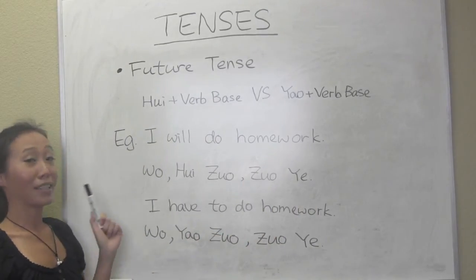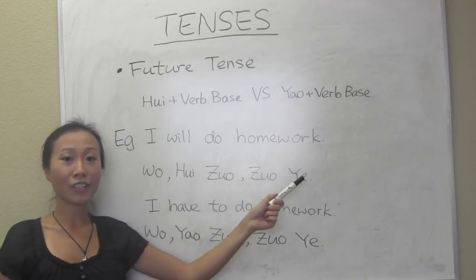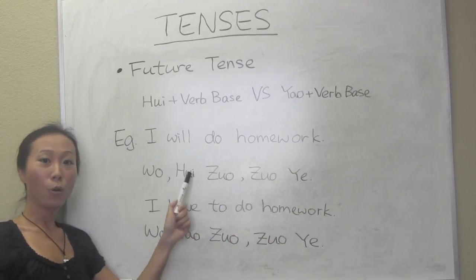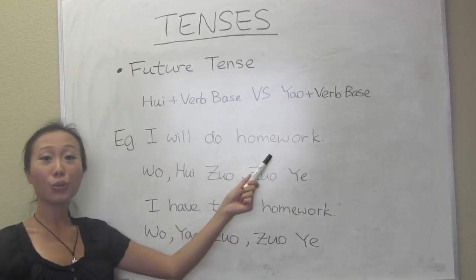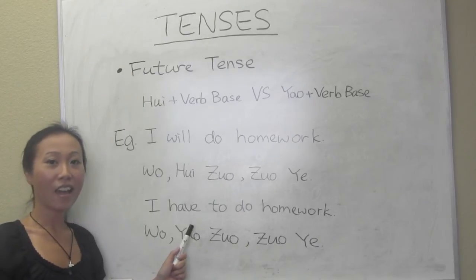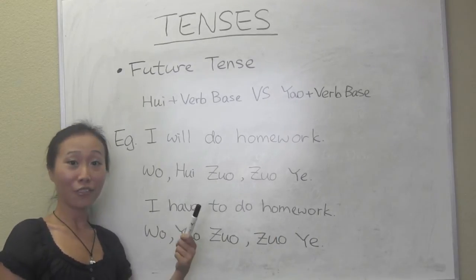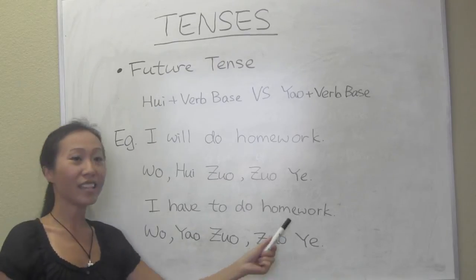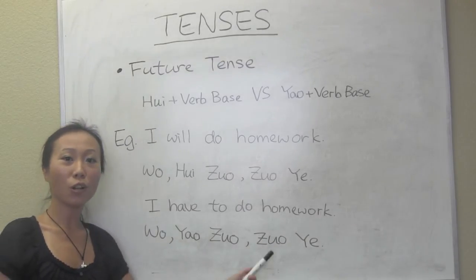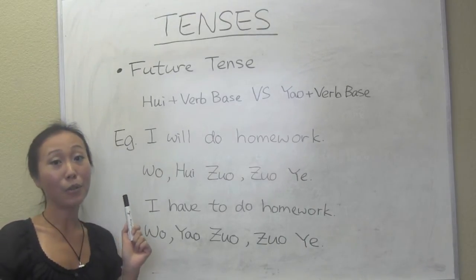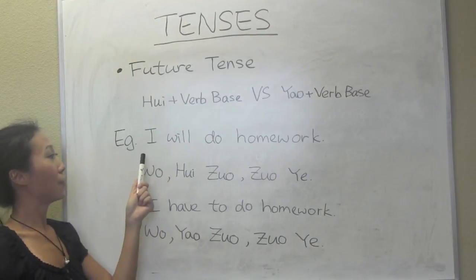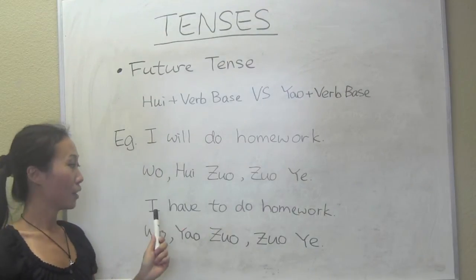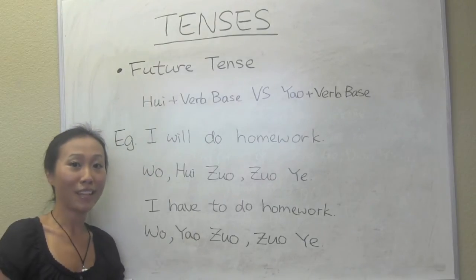Let's look at some examples. 'I will do homework' — 我会做作业 — meaning I will do homework. The other example is 'I have to do homework,' where you certainly are going to do homework — 我要做作业. So these two different examples show the future tense: 会 for 'will do' which is not certain, and 要 for 'have to do' which is certainly going to happen.